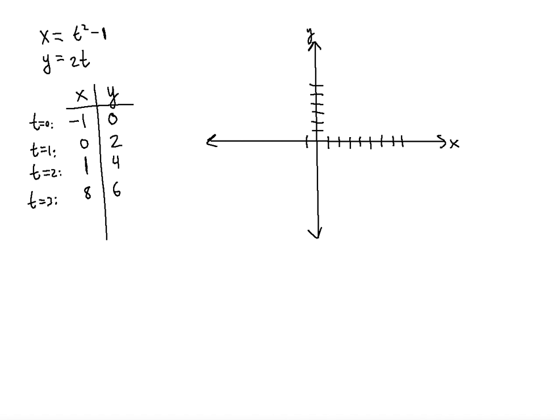Negative 1, 0, that's here. Well, let's actually use the red one. Negative 1, 0 is here. 0, 2 is here. 1, 4 is here. And then 8, 6 is at 1, 2, 3, 4, 5, 6, 7, 8 on the x-axis and 6 on the y-axis.